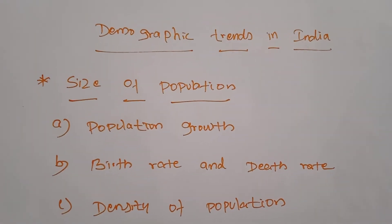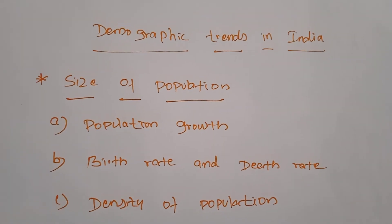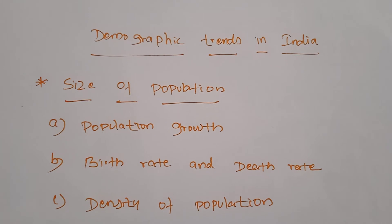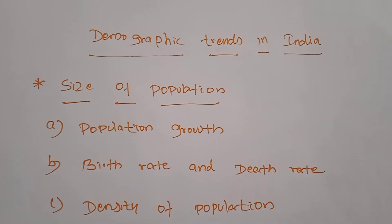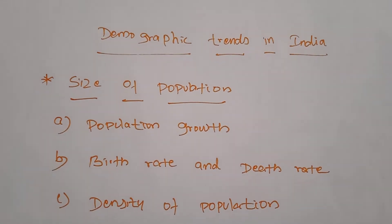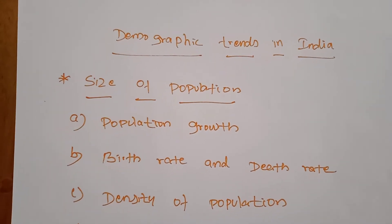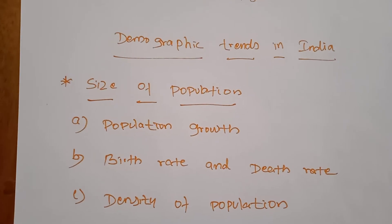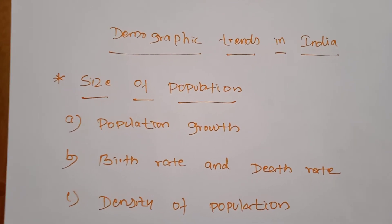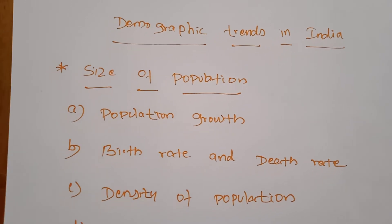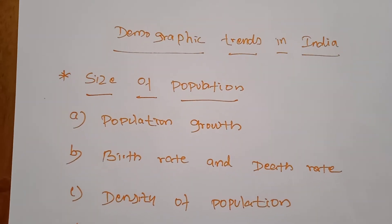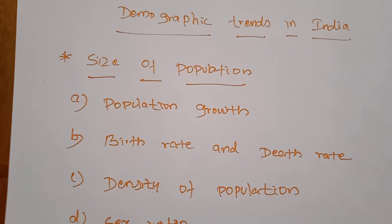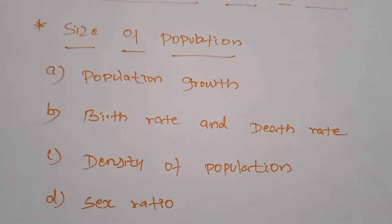Next, we will study demographic trends in India. The scientific study of the characteristics of a population is known as demography. The various aspects of demographic trends in India include size of population, rate of growth, birth and death rates, density of population, sex ratio, life expectancy at birth, and literacy ratio.